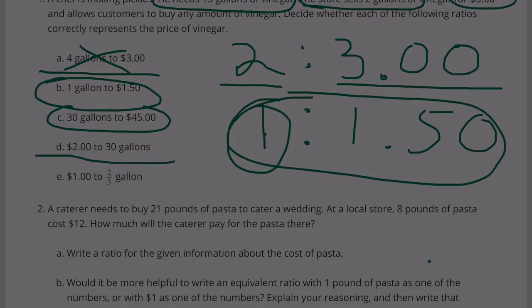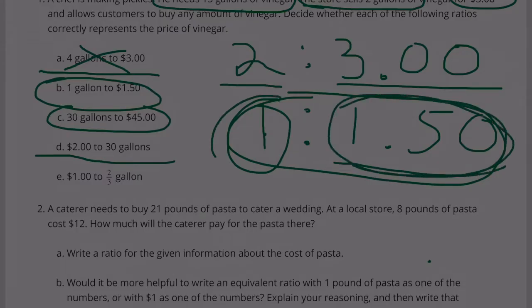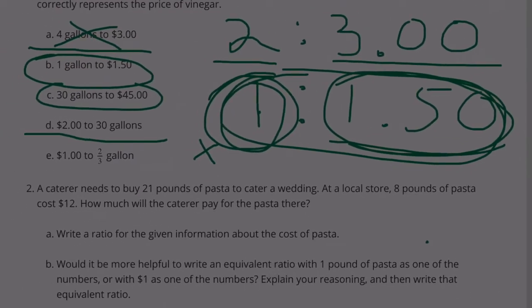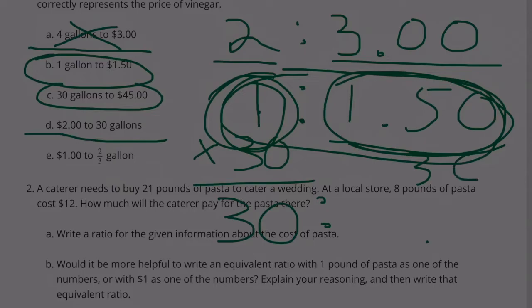Option D: $2.00 to 30 gallons. No, that's not even going to be close. If it's $1.50 per gallon, there's no way you're going to get 30 gallons for $2.00. If we multiply 1 times 30 to get 30 gallons, then we'd have to multiply $1.50 times 30, which gets us 45. C says 30 gallons is $45, so D can't be correct.